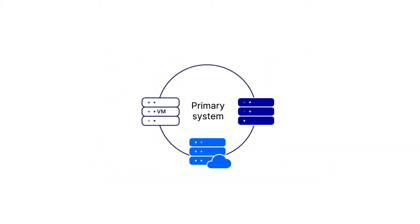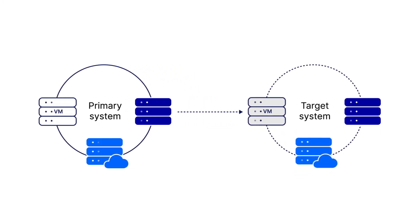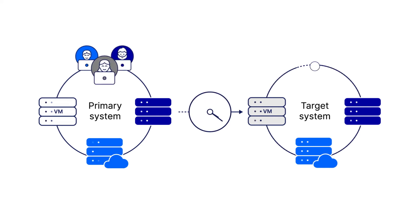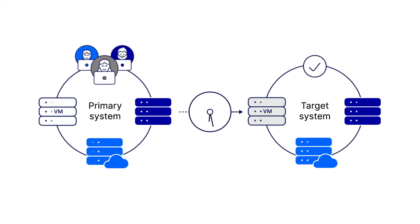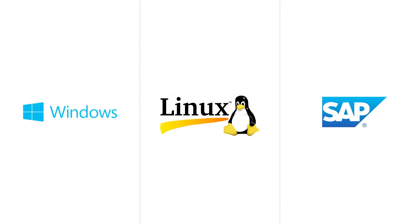Here's how it works. OpenText Migrate uses real-time replication to create a replica of the server. The replica is kept in sync and test cutovers can be performed anytime without impacting production. This byte-level replication simplifies the migration of traditionally challenging Windows, Linux, or SAP workloads.